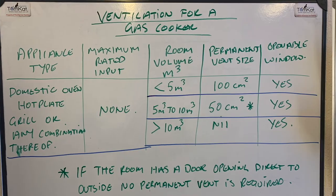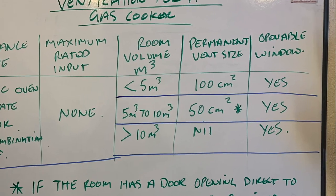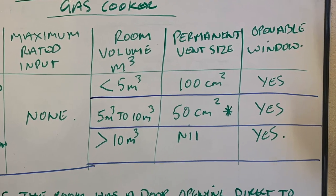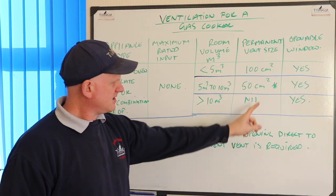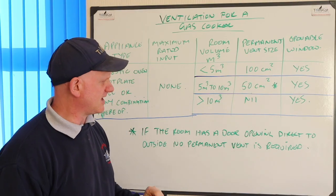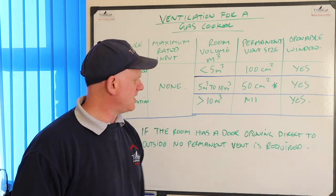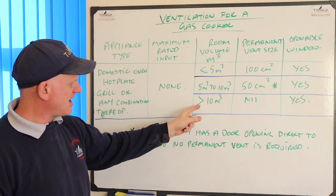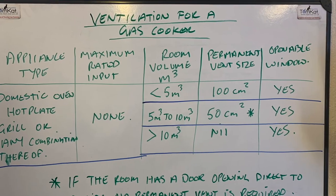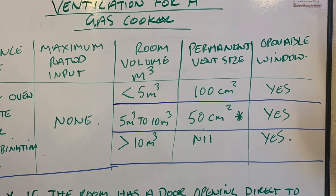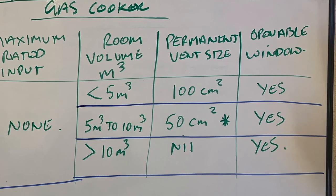If we have a room volume between five and ten metres cubed we need 50 centimetres squared — there's an asterisk we'll look at in a moment — and we also need an openable window. If the room is greater than ten metres cubed, we don't need any permanent ventilation but we still need the openable window.